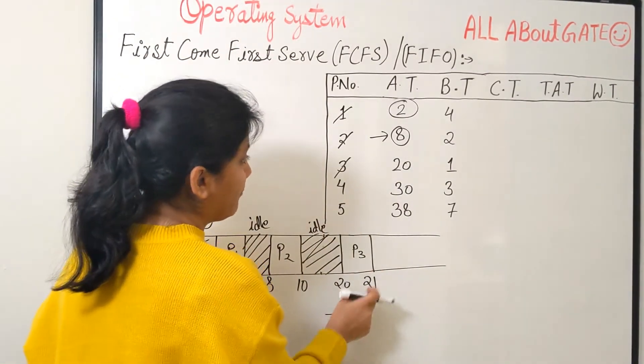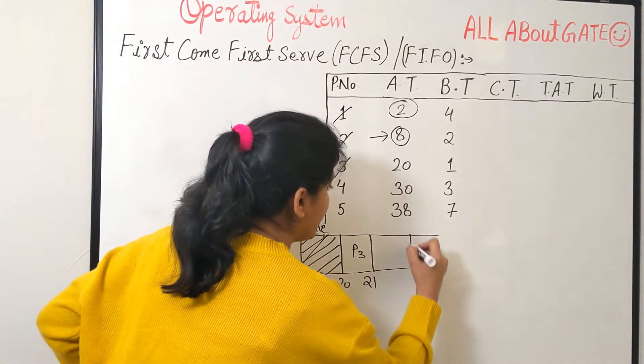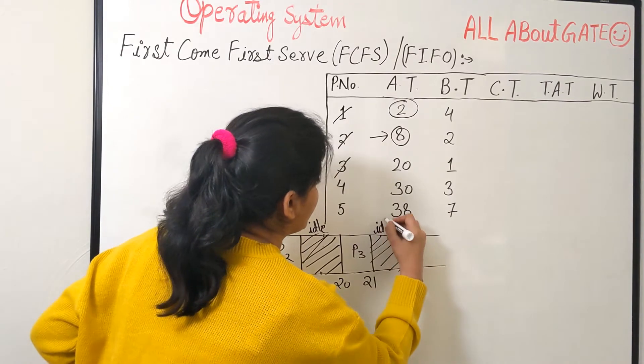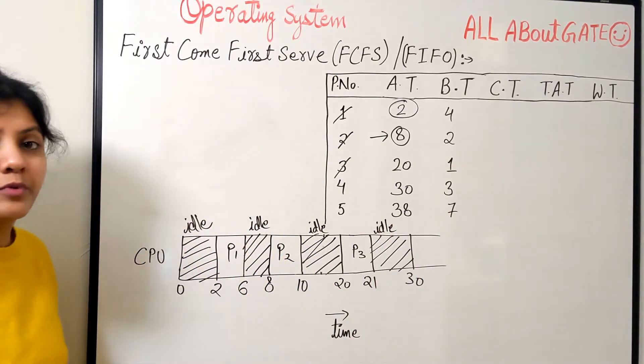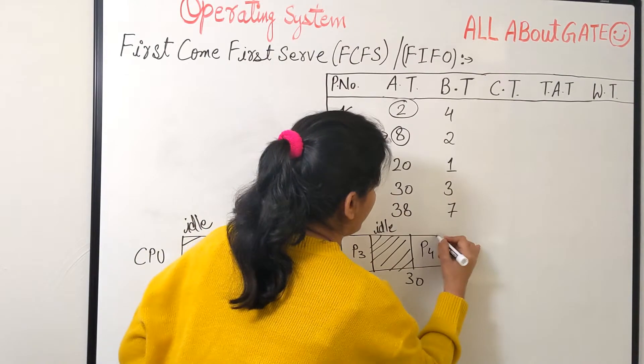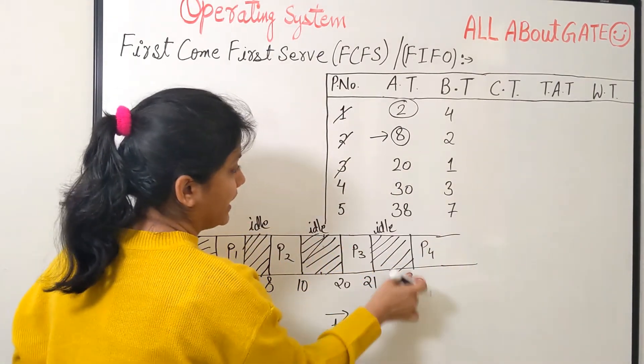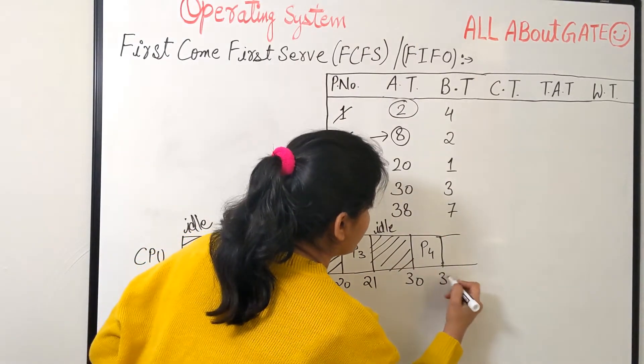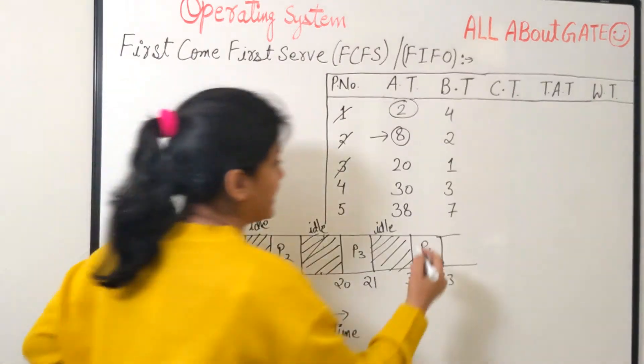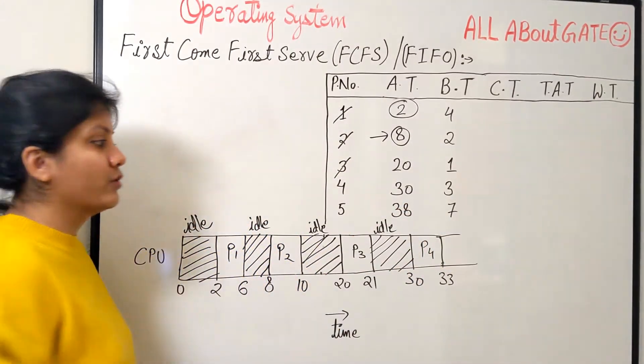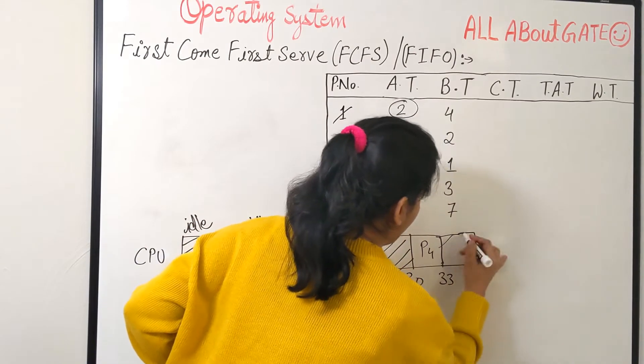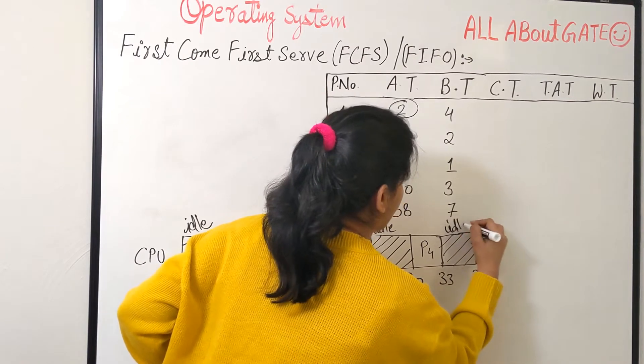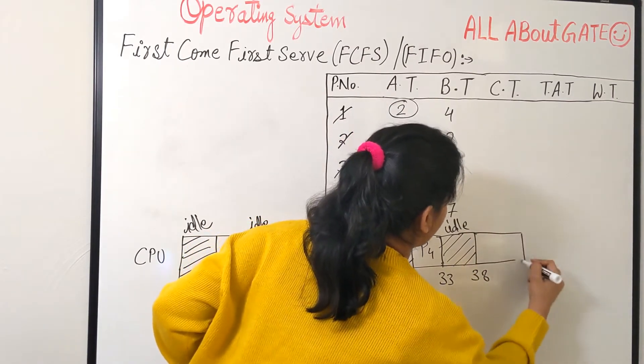Now next process 21 to 30. No process available. So again 21 to 30, it's nothing but the time to be idle for CPU. We have no process to schedule. Now next process P4. P4 is arriving at the time 30. And how much burst does it need? It needs 3. So P4 from 30 to 33. Now once again the next process is available at 38. So it shows the idle again. So 33 to 38, again idle time.